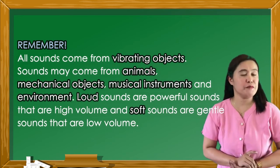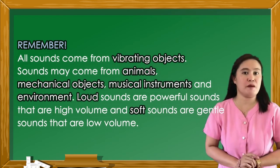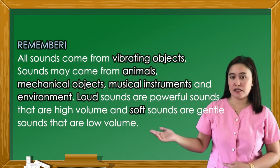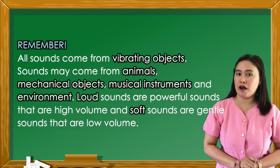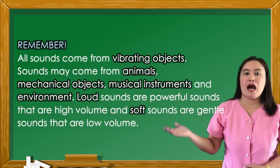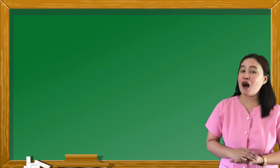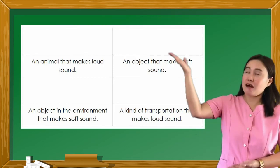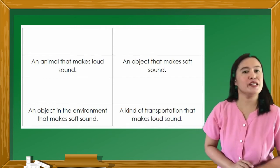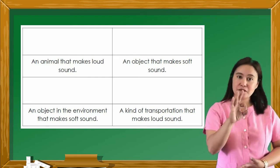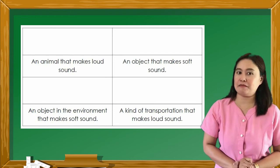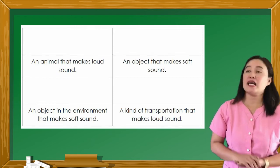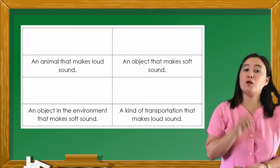Remember, all sounds come from vibrating objects. Sound may come from animals, mechanical objects, musical instruments, and environmental sounds. Loud sounds are powerful sounds that are high volume. Soft sounds are gentle sounds that are low volume. Now, let's see how far you have learned about our lesson today. First, draw an animal that makes a loud sound. Second, draw an object that makes a soft sound. Third, draw an object in the environment that makes a soft sound. And lastly, draw a kind of transportation that makes a loud sound. For this activity, I will give you one minute to answer.